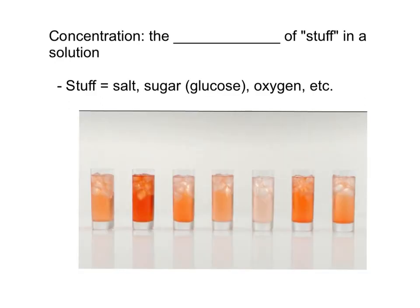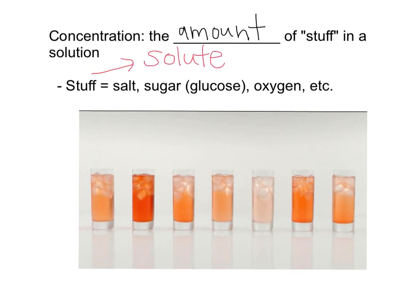The first thing we need to discuss to understand the concentration gradient is concentration itself. When we talk about concentration, we're saying it's the amount of stuff in a solution. Stuff can be things like salt, sugar, or oxygen. The more scientific word for the stuff is called the solute. So a concentration is the amount of solute in a solution, and a solution is just a liquid that the cell is sitting in.